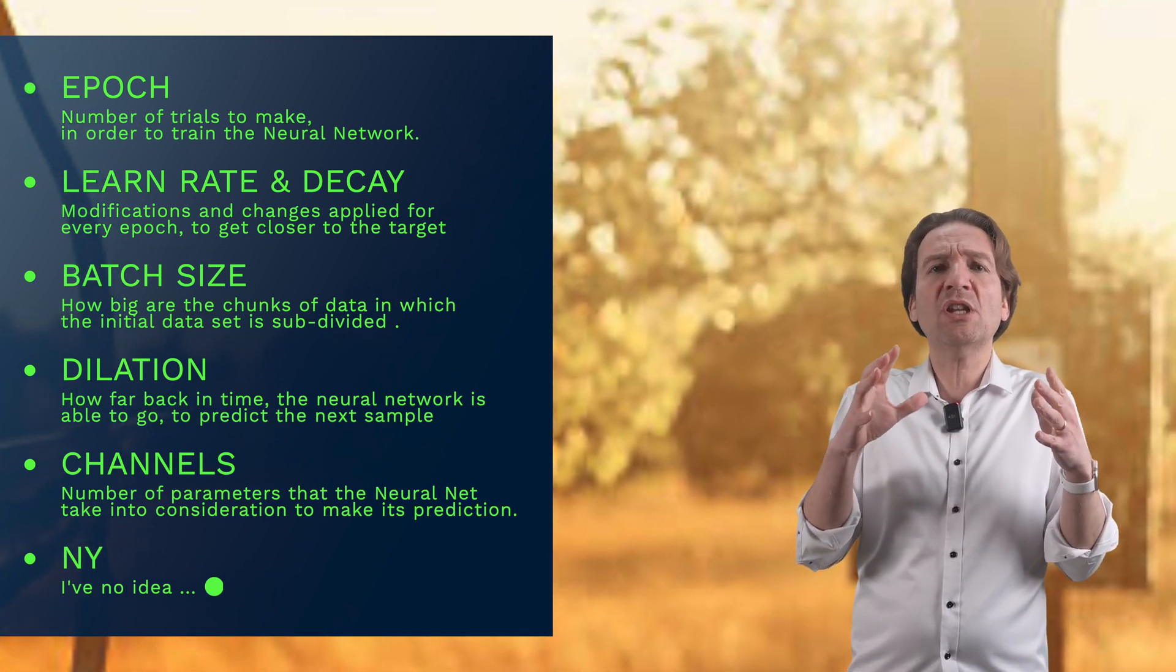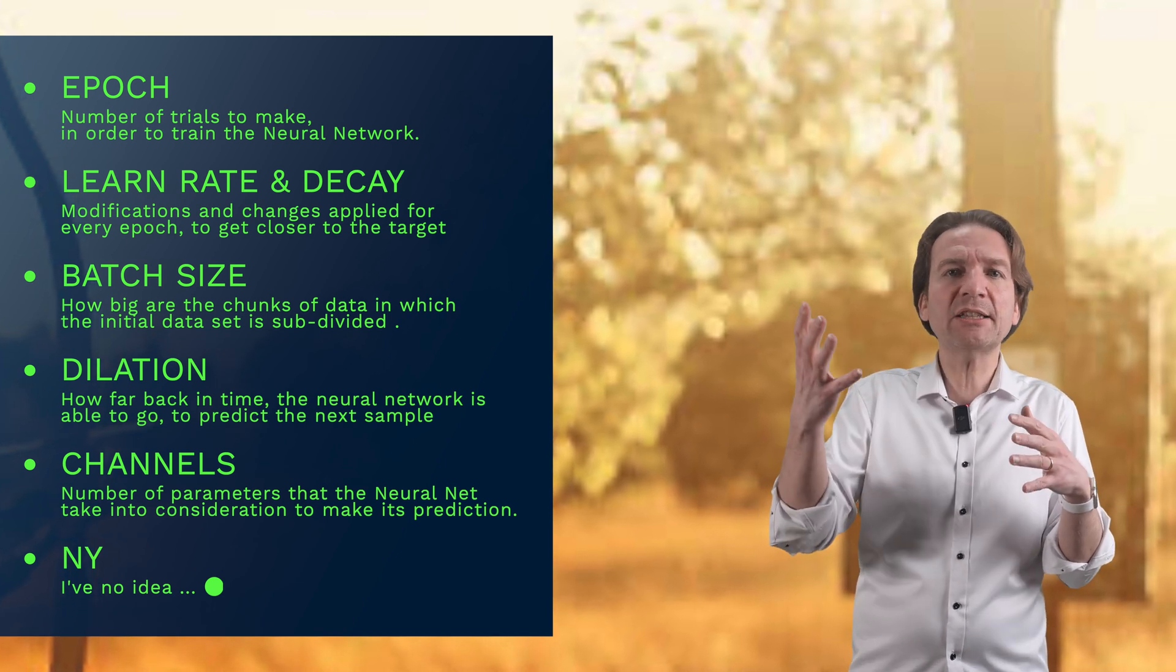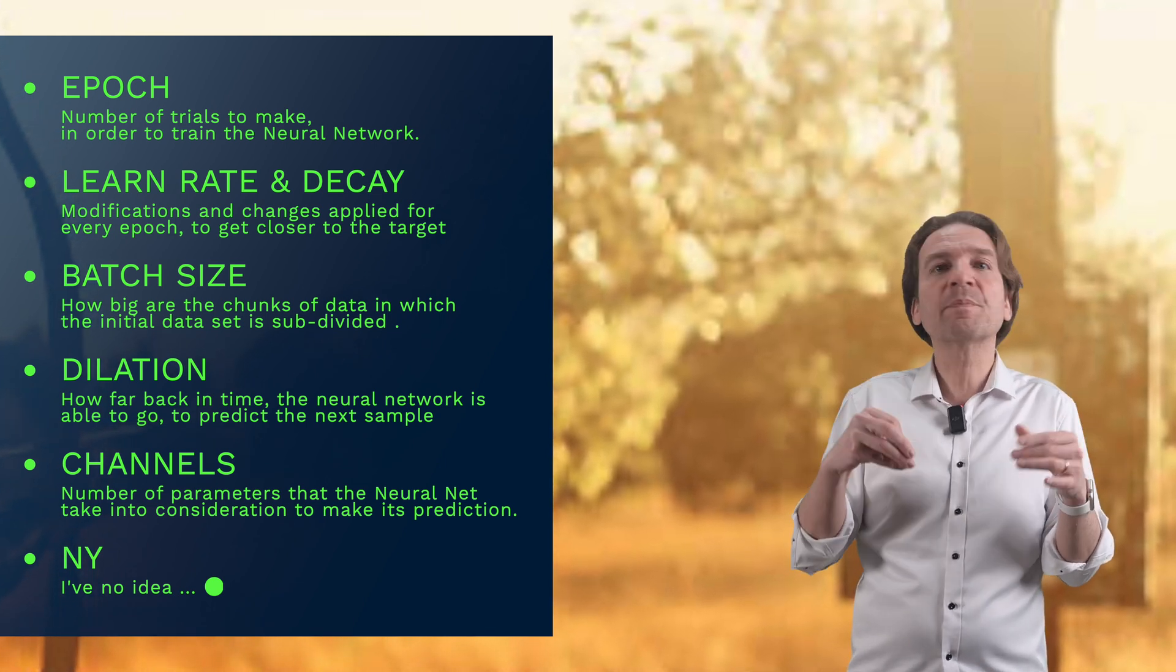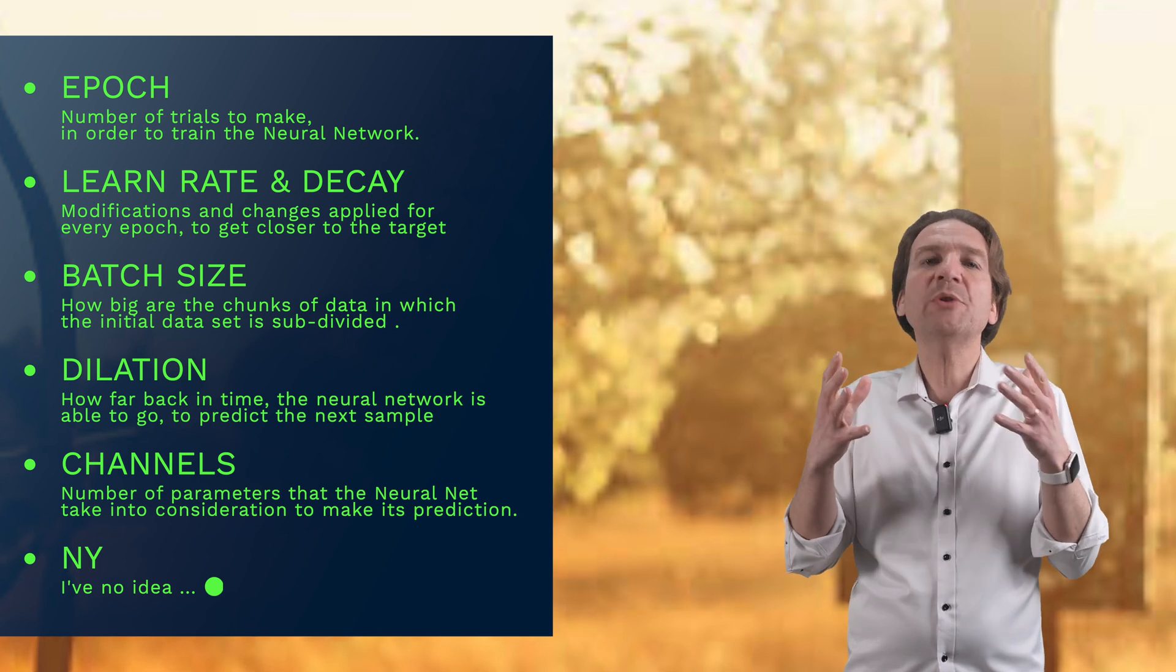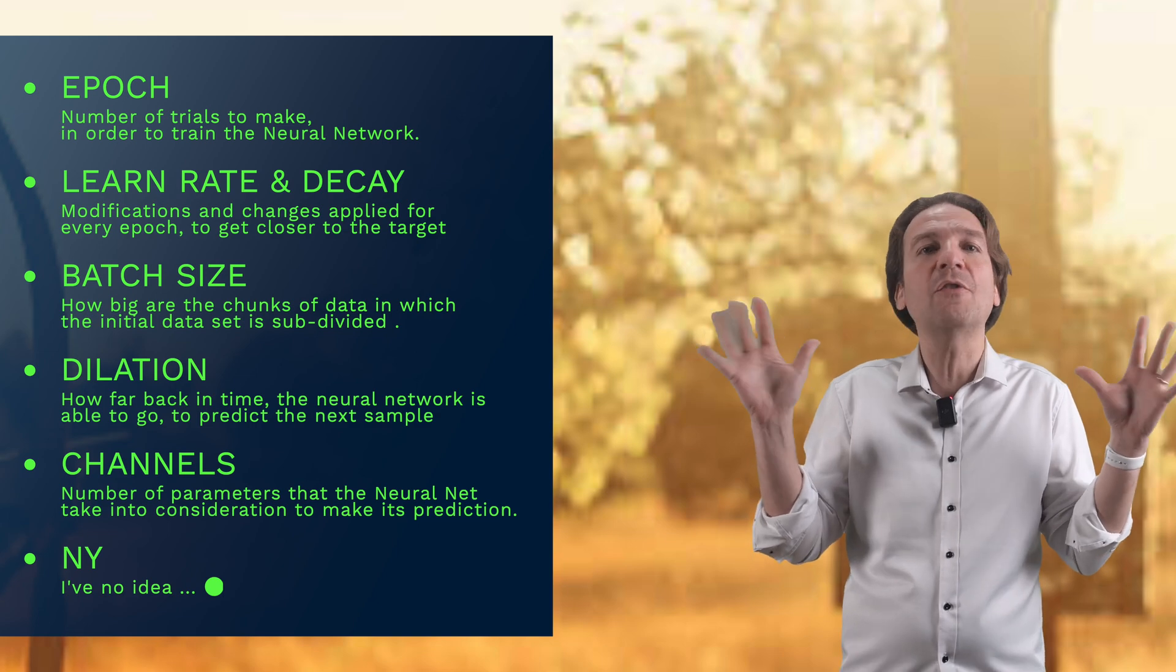The channel parameter basically defines how many parameters I'm taking into consideration for each shoot. For instance, if I take into consideration the speed of the wind, how far I am from the target, which is the weight of my arrow, I'm using a channel which value is 3. And lastly we have the NY that I'm not able to explain, unfortunately.